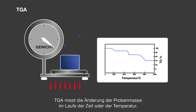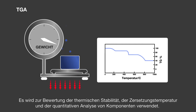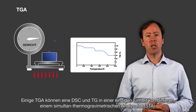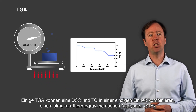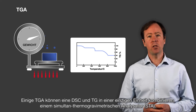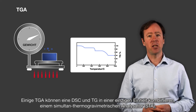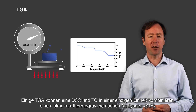TGA measures sample mass change over time or temperature. It's used for evaluating thermal stability, decomposition temperature and quantitative analysis of components. Some TGA instruments can combine DSC and TGA into one simultaneous single unit to give you a STA, a simultaneous thermal gravimetric analyzer.